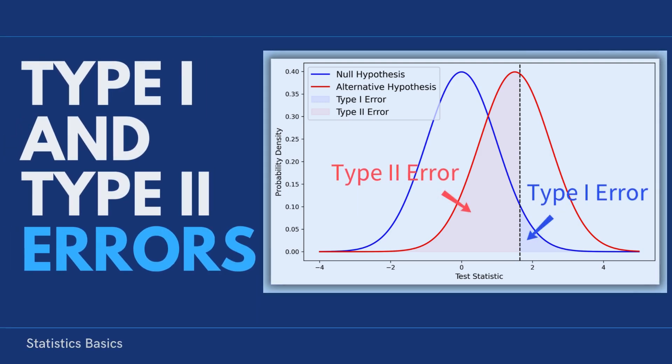Welcome to Statistics Basics. Today, we are going to take a closer look at two common mistakes that can happen when we use statistics to make decisions: type 1 and type 2 errors.